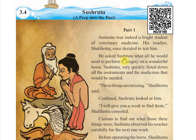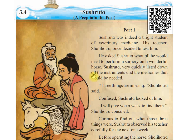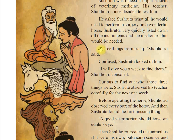He asked Sushruta what all he would need to perform a surgery on a wonderful horse. Surgery means to do an operation. The animal mentioned here is a horse. So Shalihotara asked Sushruta what all things you require to perform a surgery on a wonderful horse.